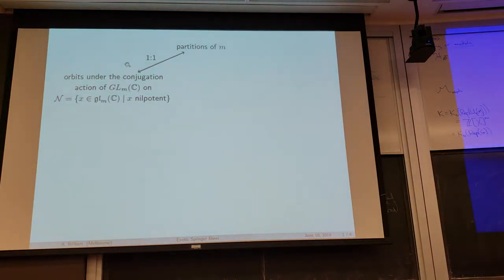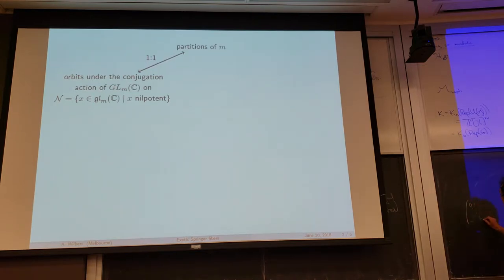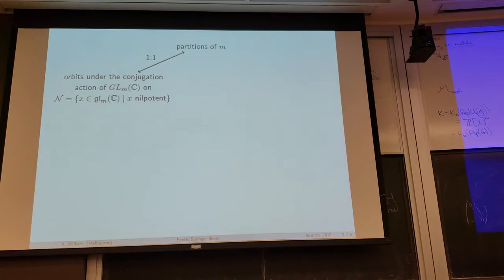This bijection is pretty simple. You just pick your nilpotent element, bring it into Jordan normal form, and then your Jordan blocks — since this is a nilpotent element — all look like this. You basically just encode the size of the different blocks in your partition, and that gives you your bijection.